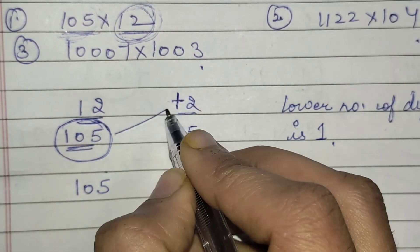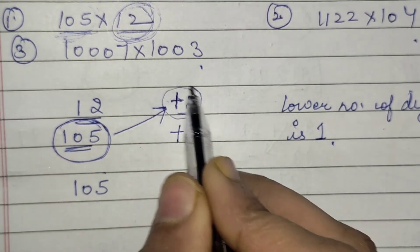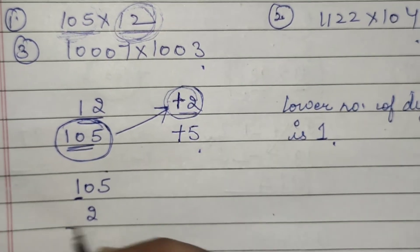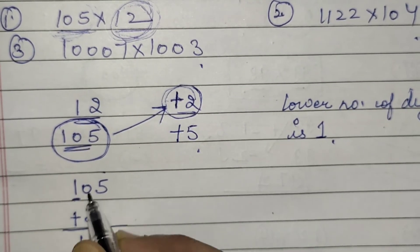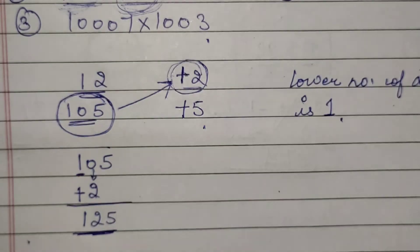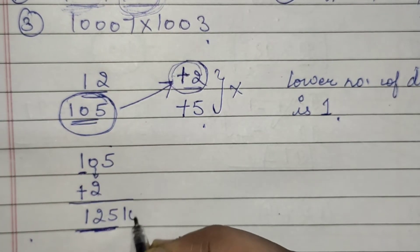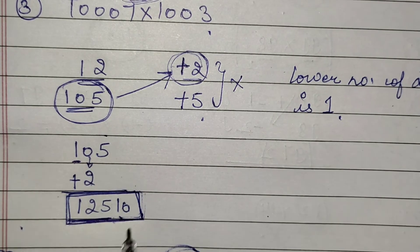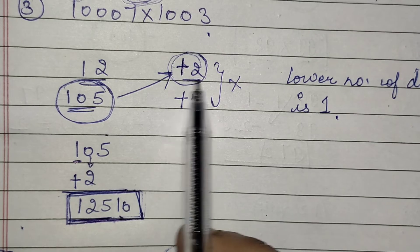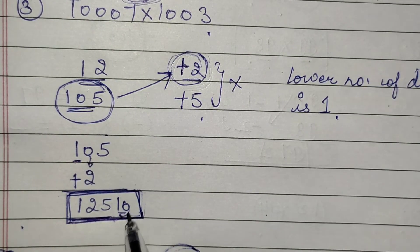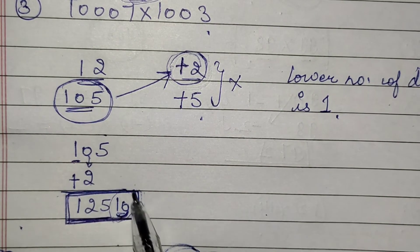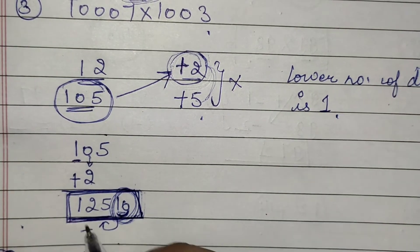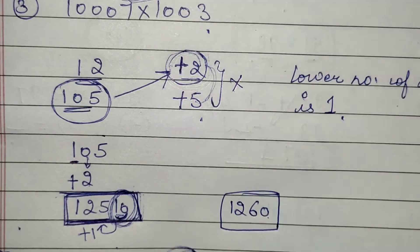You have to do addition, but this time your deviation number is also of one digit. So you have to write down your number by skipping one place — start writing from the second place. After doing addition you get 125, and multiplying the two deviations gives 2 into 5 equals 10. Since only one digit is allowed at the last place, 10 cannot fit — so the 1 carries over, making 125 become 126 and 0. The final answer is 1260.